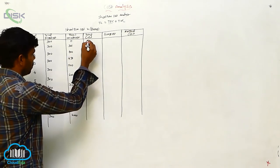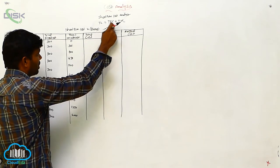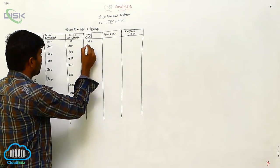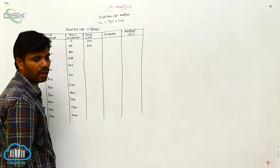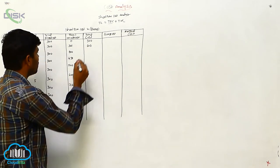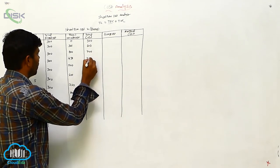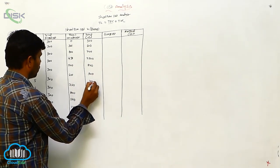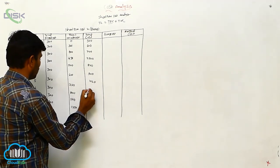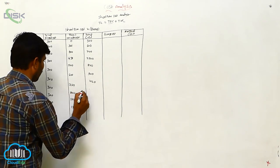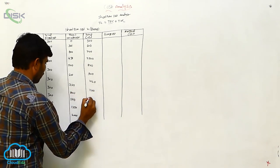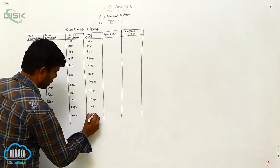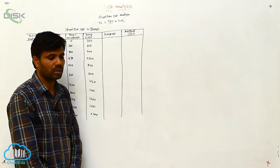What is the total cost? Total cost equals TFC plus TVC. The total cost values are: 300, 600, 700, 750, 800, 900, 1020, 1100, 1400, 1650, and 2300. This gives us the total cost at each output level.